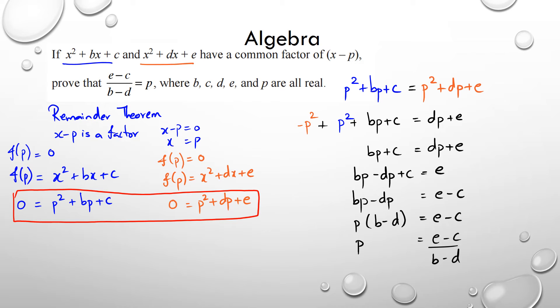So to get an excellence in this question, I believe obviously you need to get up to here. To get a merit, it looks like successfully equating coefficients or equating the two equations in the achieved columns. So probably somewhere here, you're looking at a merit. And of course, for an achieved, either doing this or this here.